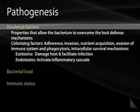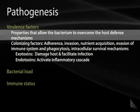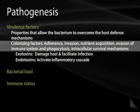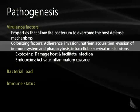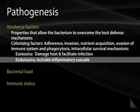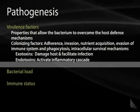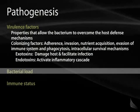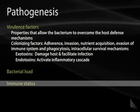Bacteria have a number of virulence factors — properties which allow the bacterium to overcome host mechanisms. They have colonizing factors which help them adhere, invade, acquire proper nutrients, evade phagocytosis, and survive intracellularly. Exotoxins are made by bacteria which damage the host and facilitate infection. Endotoxins activate an inflammatory cascade. Bacteria also rely on sufficient numbers to overwhelm our systems, and they take advantage when we lack immunity against them.